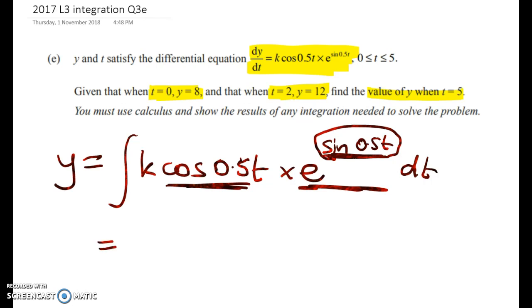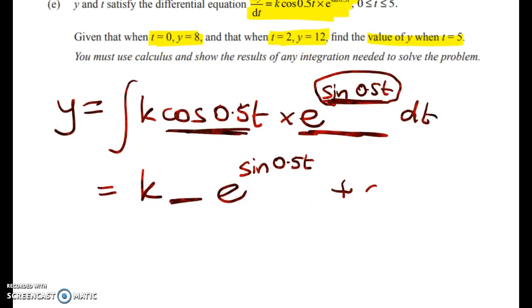So we can integrate this as follows. We're going to have k times something in here, e to the sine of 0.5t. Now if I differentiate that, I'm going to get, we need a plus c as well. So if I differentiate e to the sine of 0.5t with respect to t,